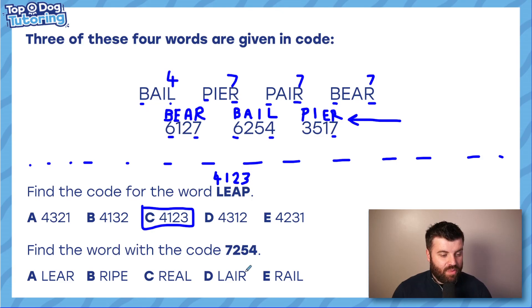And the next one, find the word with the code seven, two, five, four, which is going to work backwards. Seven in peer shows it was an R. Two, we're going to have to go here to bear. It was an A. Can I get the answer already? Yes. There's only one word that starts R-A. It's not leer. It's not ripe. It's not real. It's not there. It must be rail. The answer is E. And we can move on.